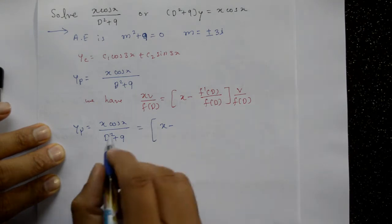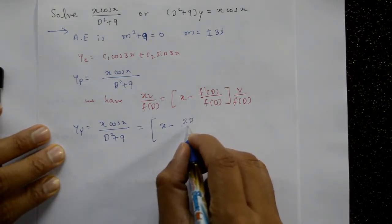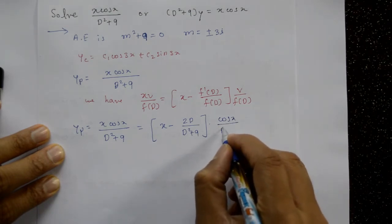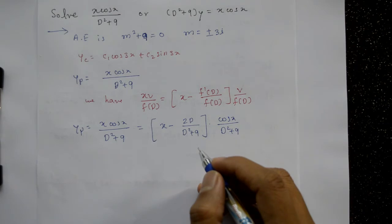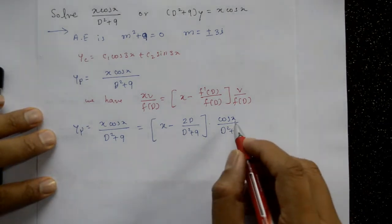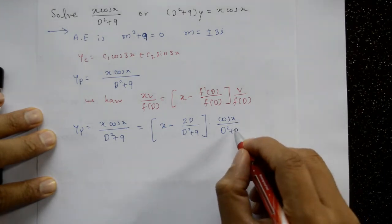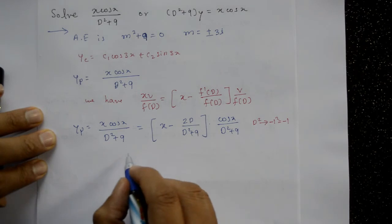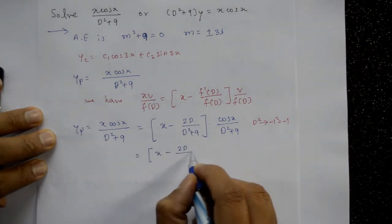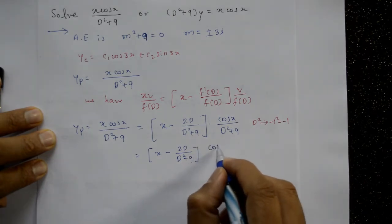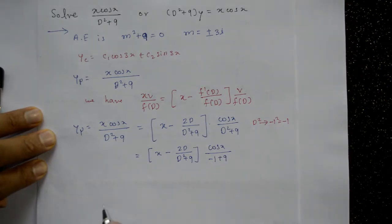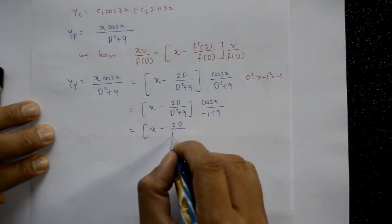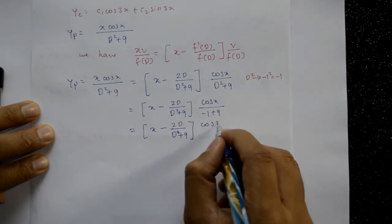So yp = [x − 2D/(D²+9)] · cos(x)/(D²+9). Using Type 2 for cos(ax)/f(D) with a=1, we substitute D² = −1, giving cos(x)/(−1+9) = cos(x)/8. This gives [x − 2D/(D²+9)] · cos(x)/8.